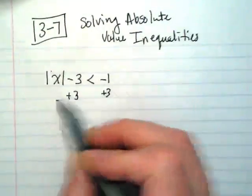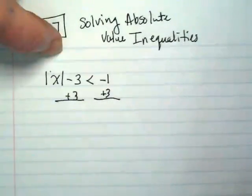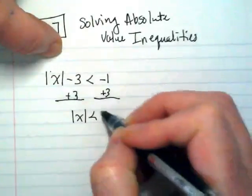Okay, so when we're solving, we're still trying to isolate the variable, and in this case it just happens to be inside the absolute value. So we're going to end up with the absolute value of x is less than 2.